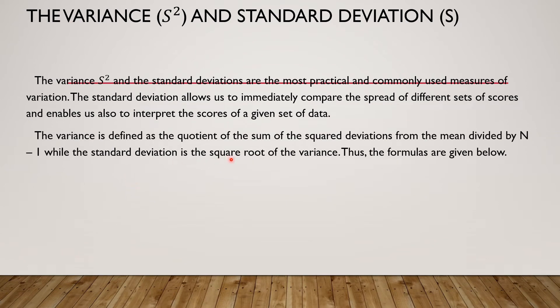The variance is defined as the sum of the square deviations from the mean divided by n minus 1, while the standard deviation is the square root of the variance. Thus, the formulas are given below. We have S squared equals the sum of x minus x-bar squared over n minus 1. And here are the formulas for variance and the standard deviations.